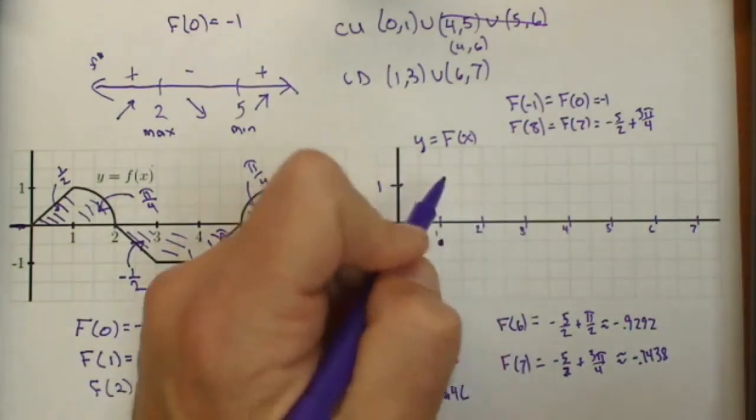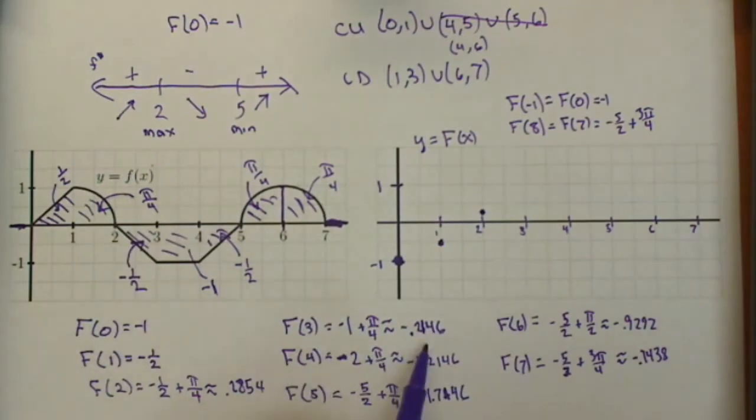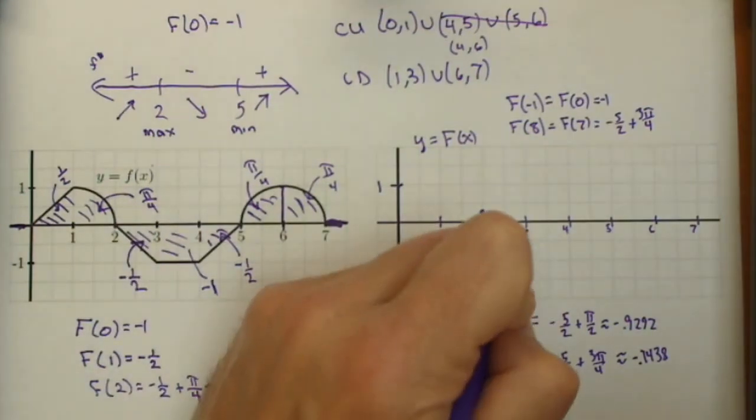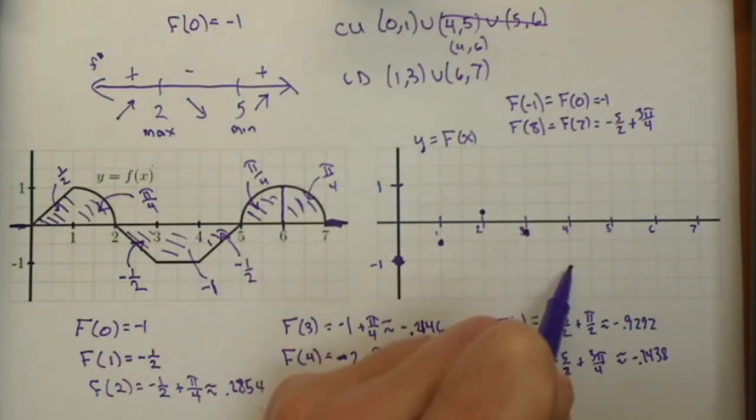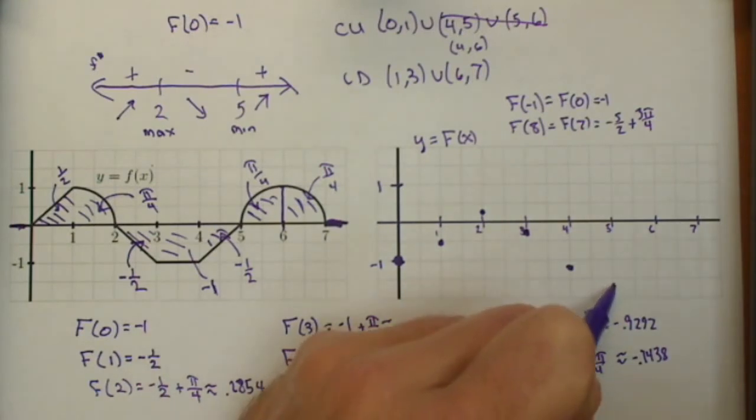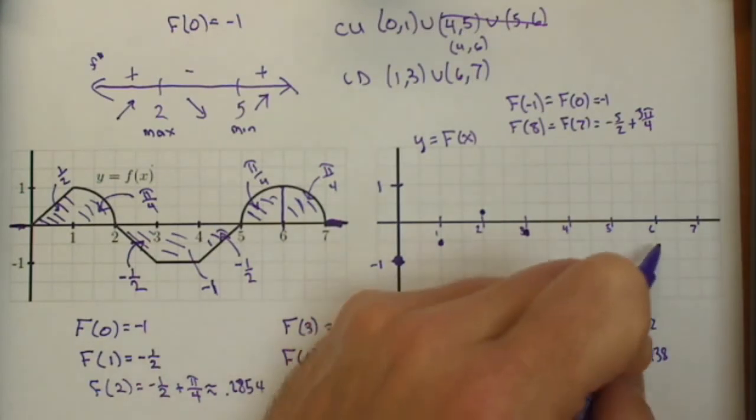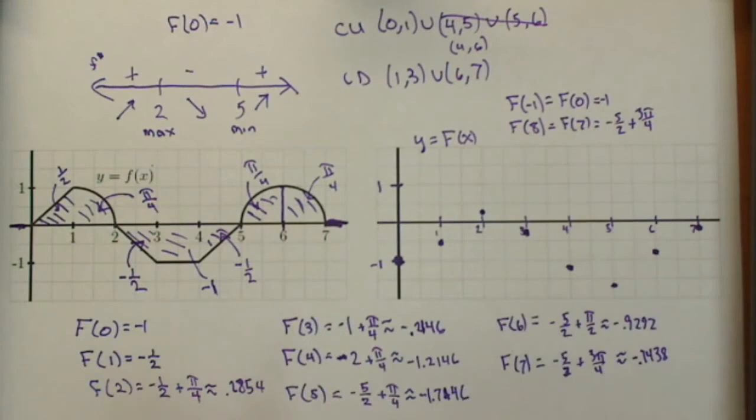f of 2 is just a little bit above our x axis. f of 3 is just a little bit below it. So f of 4 is just a little bit below negative 1. f of 5 is just a little bit below negative 1 and a half. f of 6, not quite to negative 1. And f of 7, just a little bit below that x axis. So there's our points.